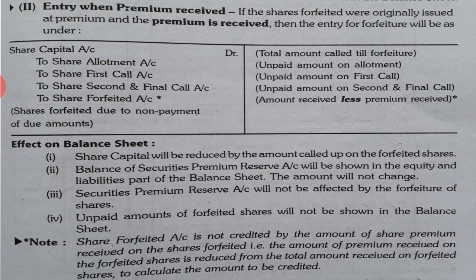We make entries for the unpaid amount of allotment, first call, second call, third and final call — all these will be credited. When premium is received, the amount written to Share Forfeited account is the amount received less premium received. So just remember this: the first and second effects are the same as in the first case — share capital will be reduced, balance of Security Premium Reserve will also be reduced, and it will be shown in equity and liabilities part of the balance sheet. When premium is already received, the Security Premium Reserve is unaffected. Only one change: when premium is not received, Security Premium Reserve account is debited; when it is received, it is not debited — only the lesser amount is written in Share Forfeited account.